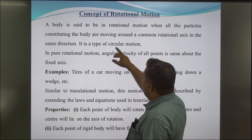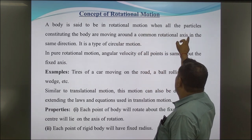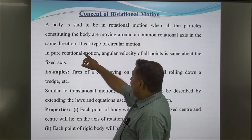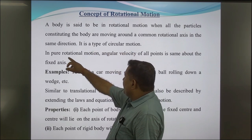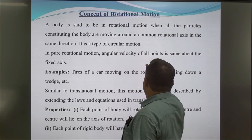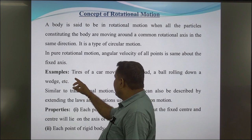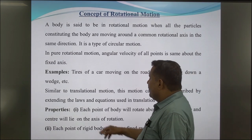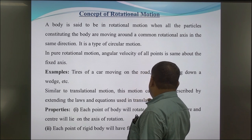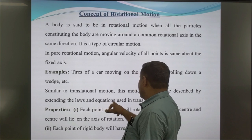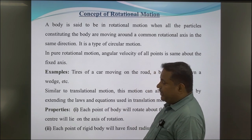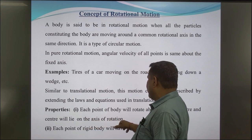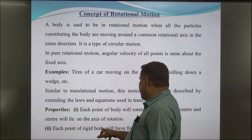Concept of rotational motion. A body is said to be in rotational motion when all the particles constructing the body are moving around a common rotational axis in the same direction. It is a type of circular motion. In pure rotational motion, the angular velocity of all points is the same about a fixed axis. For example, tires of a car moving on the road, a ball rolling down a base. Properties: each point of the body will rotate about the fixed center, and the center will lie on the axis of rotation; each point of the rigid body will have a fixed radius.